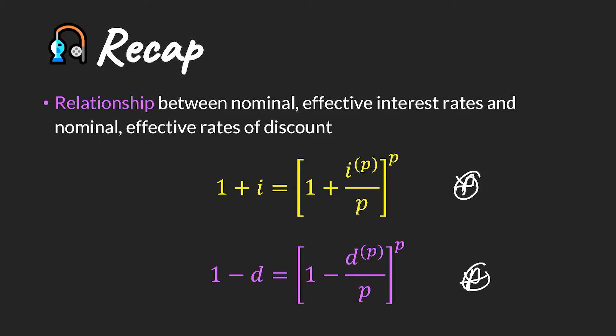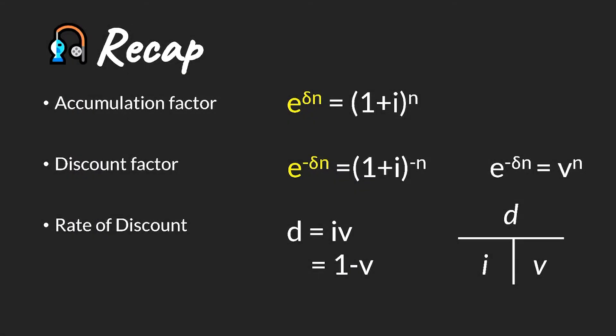As a recap, these relationships between effective and nominal rates of discount are very important and we use them to derive certain formulae. In addition, we need to remind ourselves of the relationship between effective interest rates, discount rates, and discount factor v. The triangle is very useful to remember, as well as the fact that d equals 1 minus v.